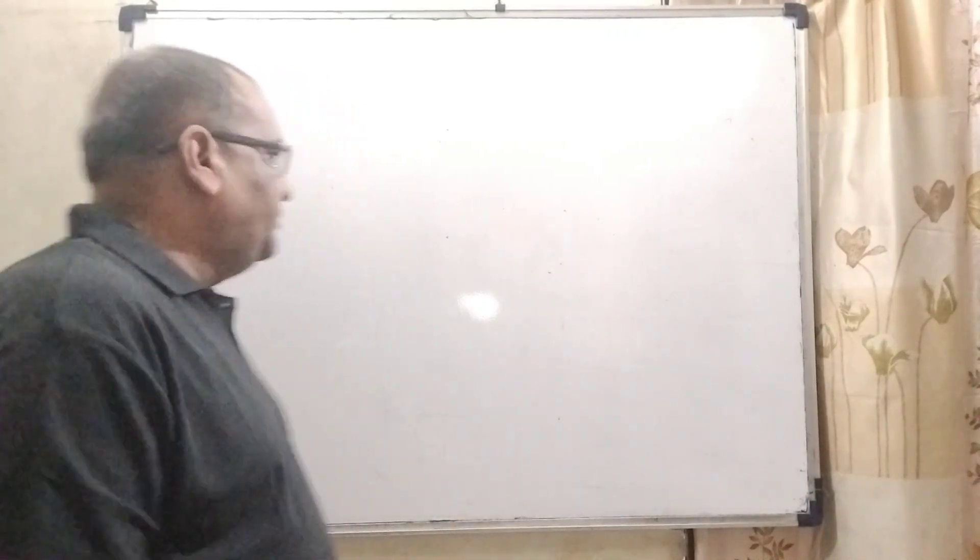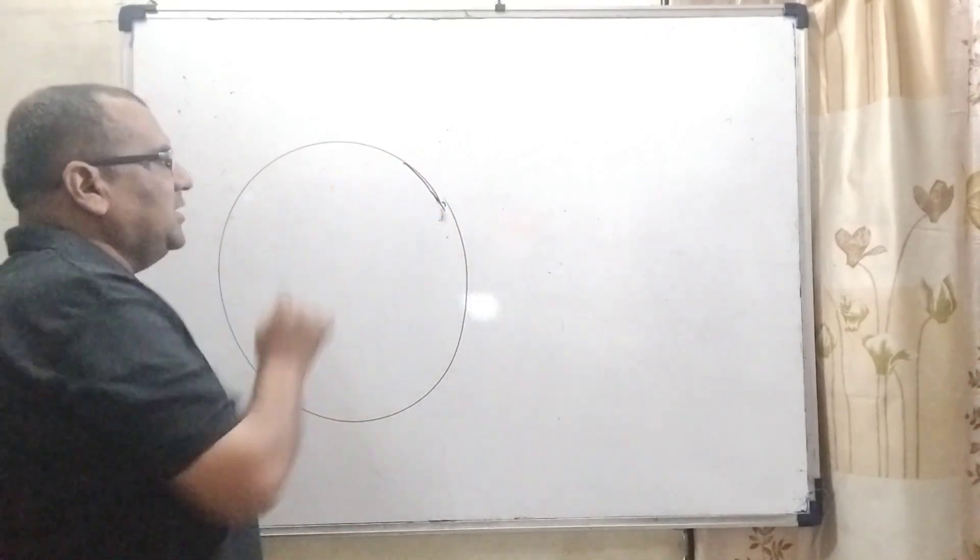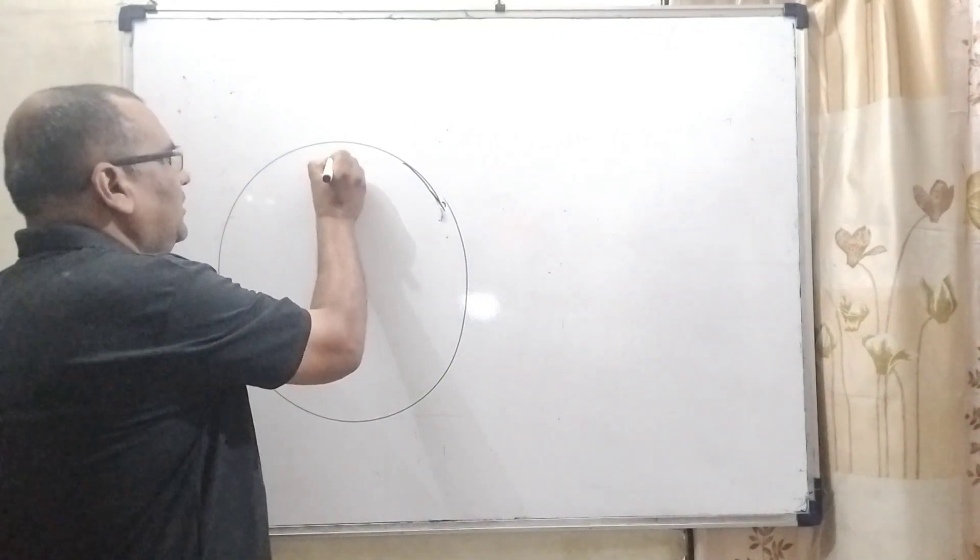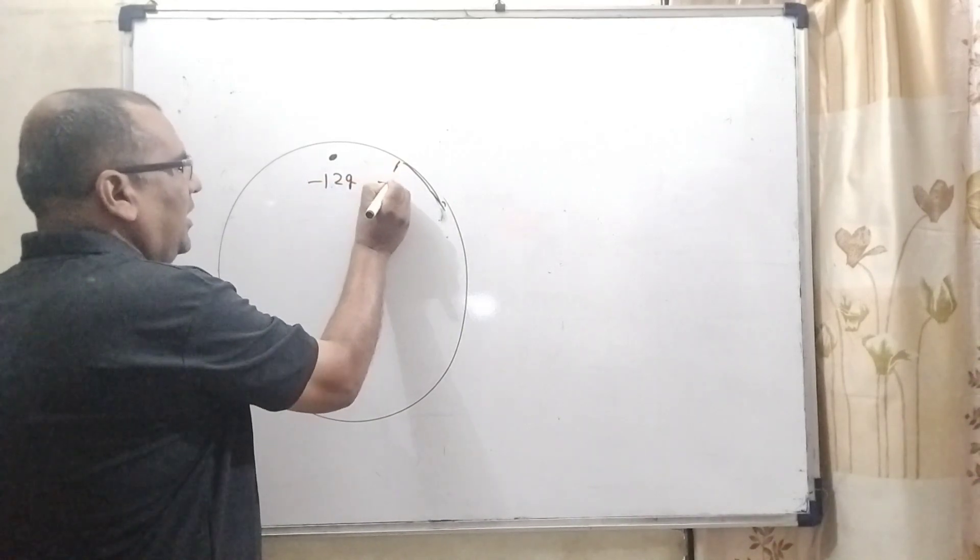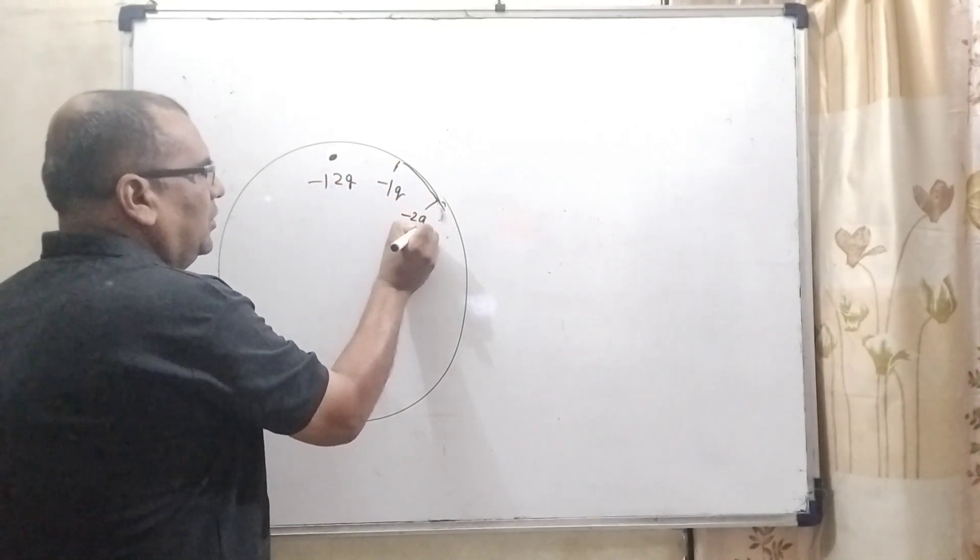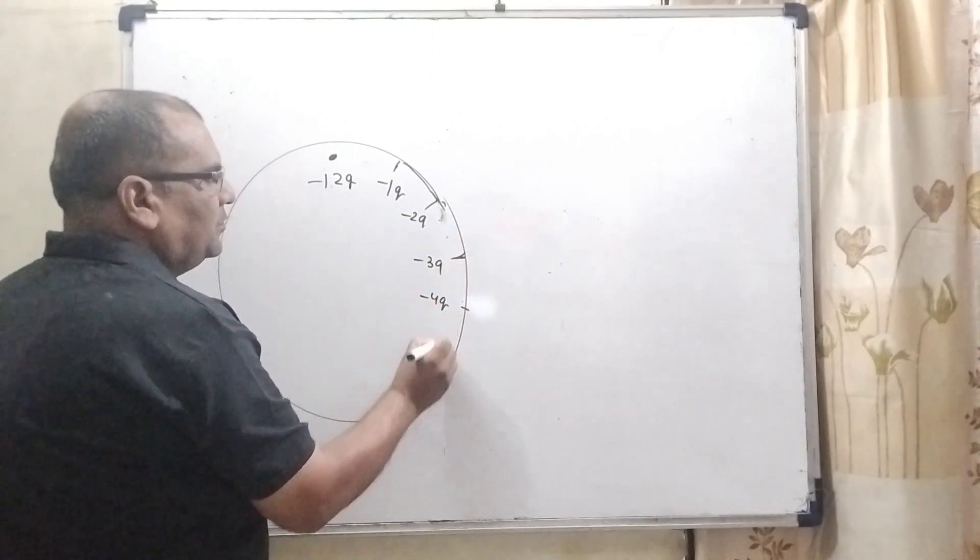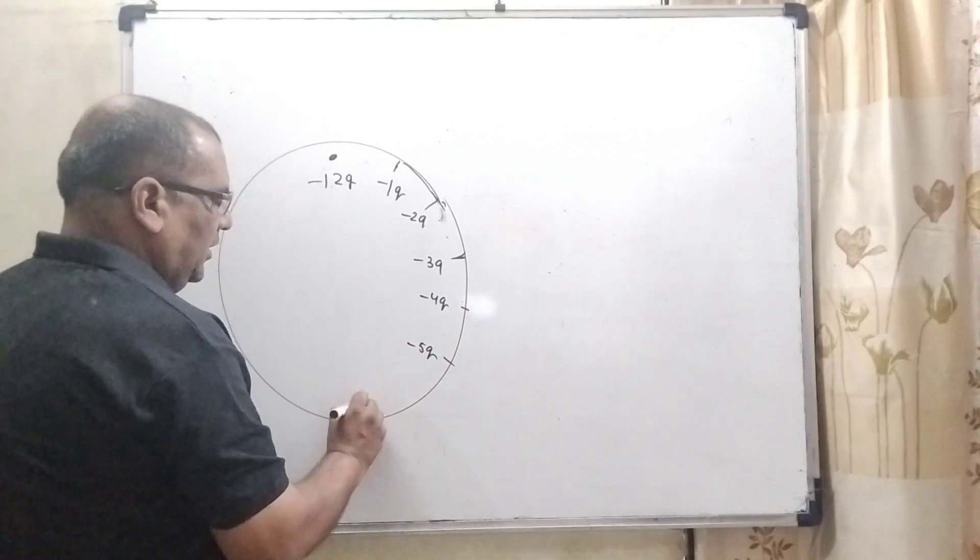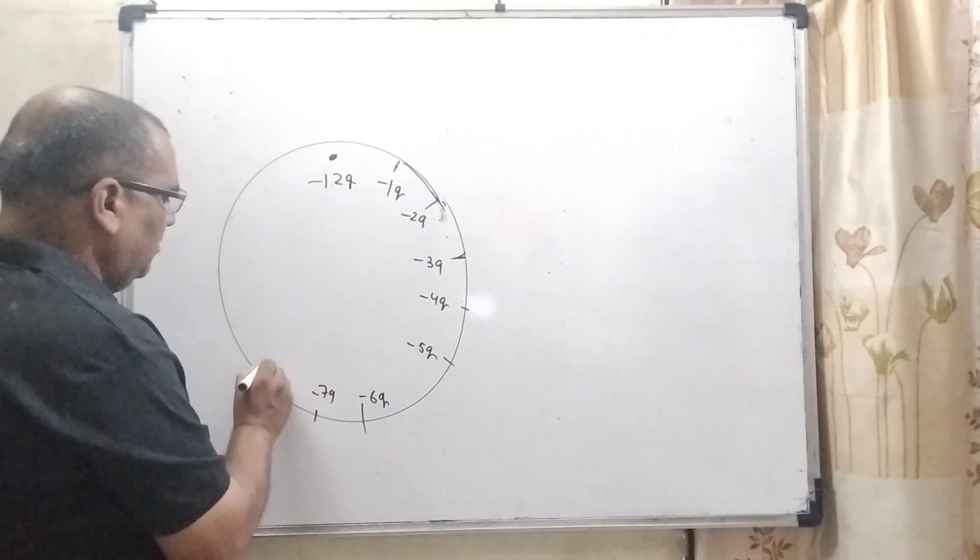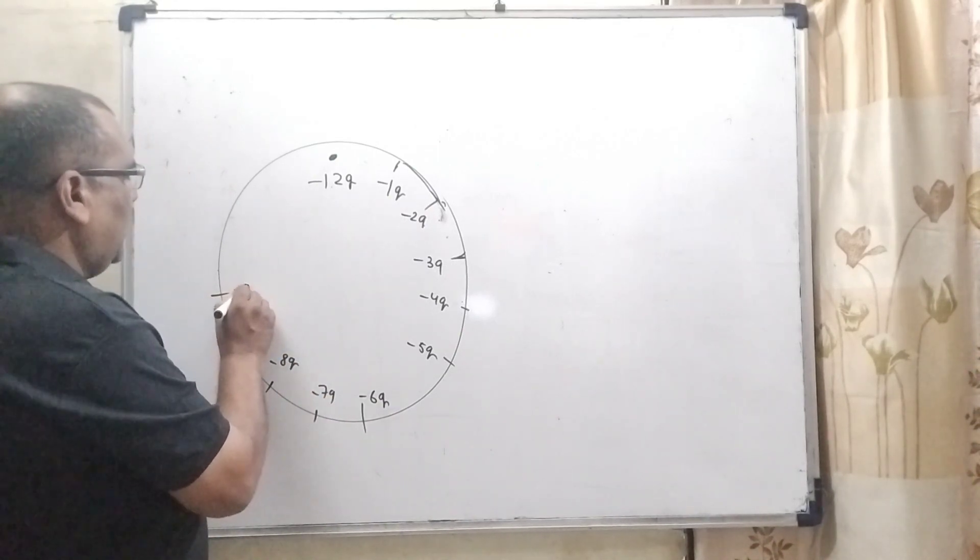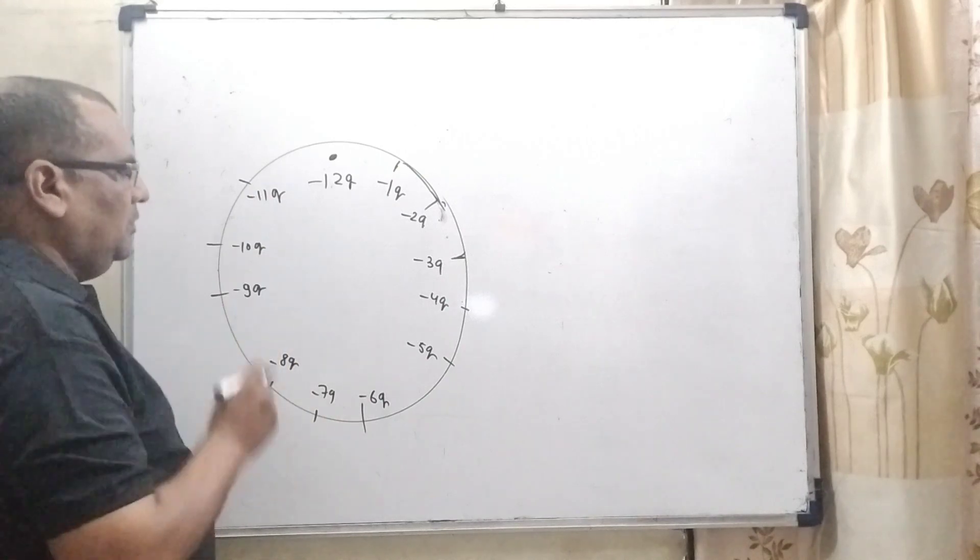Now according to the question, here we have given the charges as per the numeric position. Here 12 o'clock, so therefore minus 12Q, here minus 1Q, here minus 2Q, here minus 3Q, minus 4Q, minus 5Q, here minus 6Q, minus 7Q, minus 8Q, minus 9Q, minus 10Q, minus 11Q.